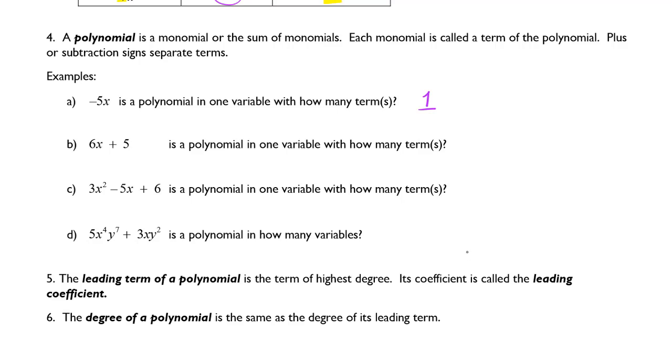In example 2, we have 6x plus 5. This is a polynomial in one variable with how many terms? Well, you count up the plus and minus signs. This is assumed to be a plus 6x plus 5, and that will give us 2 terms.